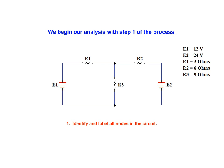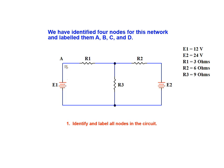We begin our analysis with step 1 of the process. We have identified four nodes for this network and labeled them node A, node B, node C, and node D.